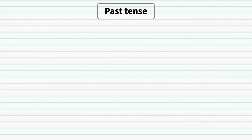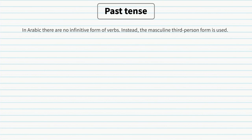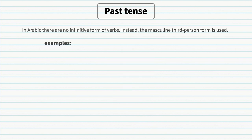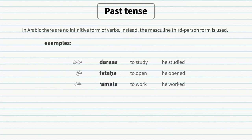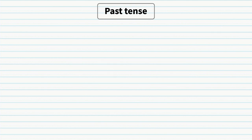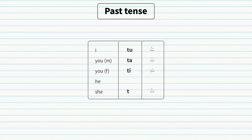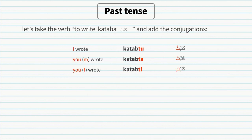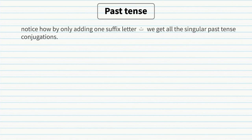Verb tenses — past tense. In Arabic there are no infinitive verbs; instead, the masculine third person form is used. For example, 'kataba' means 'to write' but literally means 'he wrote'. We will focus on singular conjugations: katabtu (I wrote), katabta (you wrote, masculine), katabti (you wrote, feminine), kataba (he wrote), katabat (she wrote).